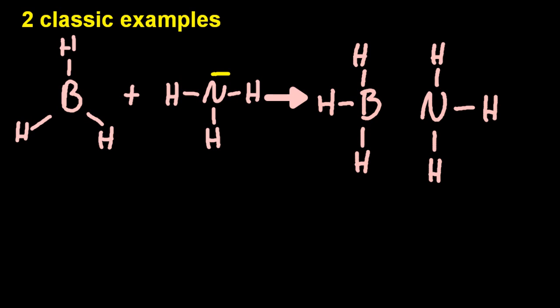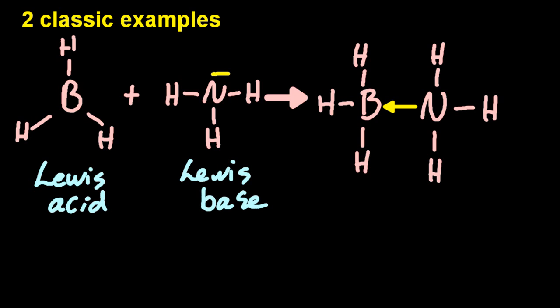Let me redraw that out tidily. So you can see that the ammonia has given away an electron pair, and the boron trihydride has received it. Lewis acid, Lewis base.